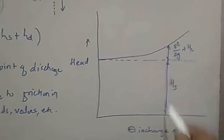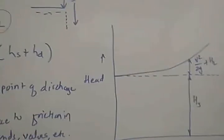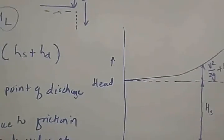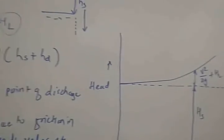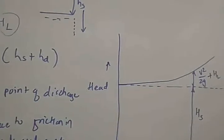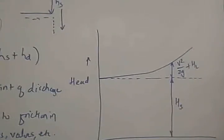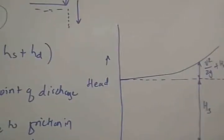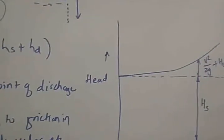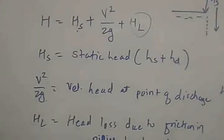In the plot, this portion represents HS and this represents V²/2G plus HS. From the system head curve, one can know the total head for the most average operating condition. So we can know what will be the total head for the most average operating condition.